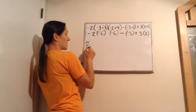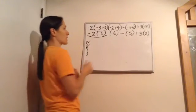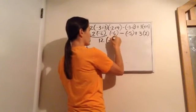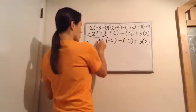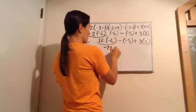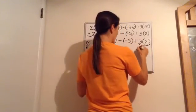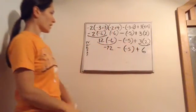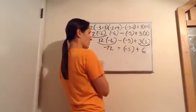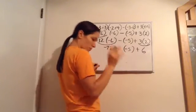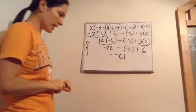No exponents. Multiply or divide left to right: −2 × (−6) = positive 12. Then 12 × (−6) = −72. Then 3 × 2 = 6. Bring everything else down. Now change minuses to plus the opposite sign: −72 + 5 + 6. The final answer is −61.